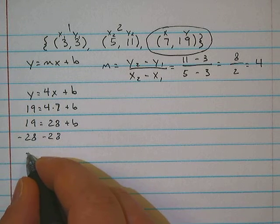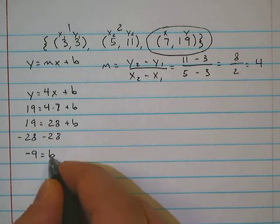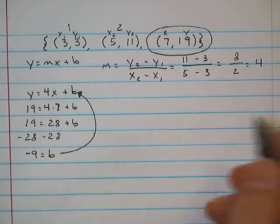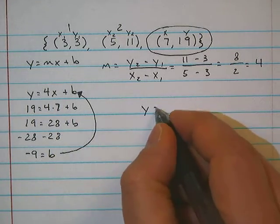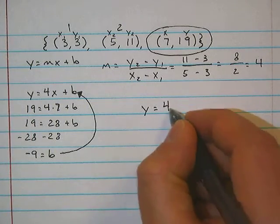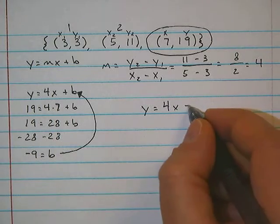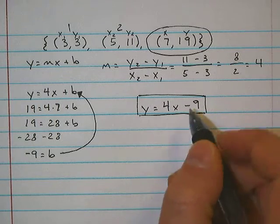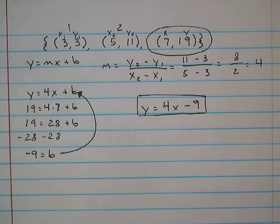Subtract 28 from both sides. And you get negative 9 is equal to b. This then gets substituted back in. And our answer would be y is equal to 4x minus 9. That is the equation in slope-intercept form for the list that was given to us.